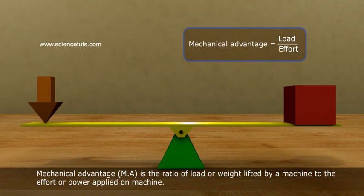Mechanical advantage, MA, is the ratio of load or weight lifted by a machine to the effort or power applied on machine.